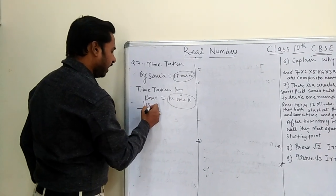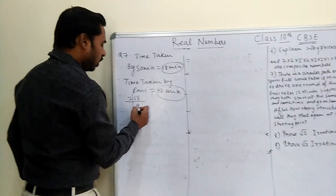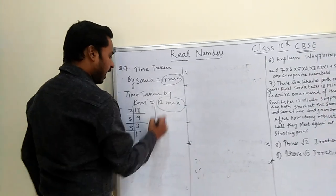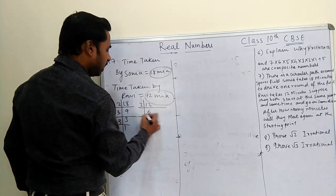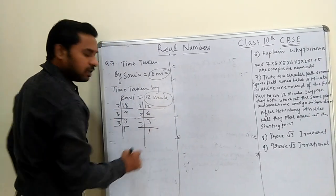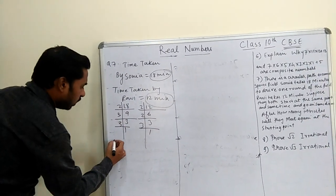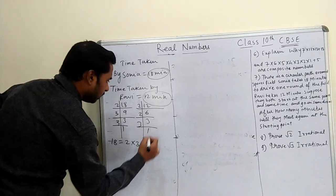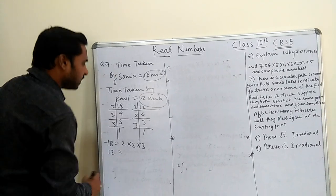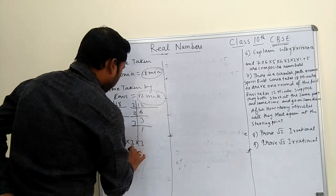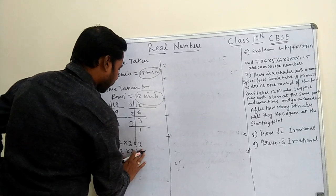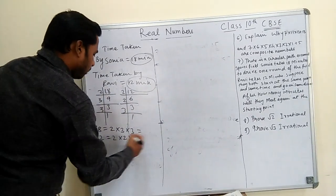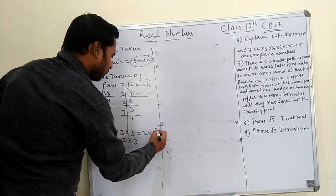First we find the prime factors. For 18: 2 × 9 = 2 × 3 × 3 = 2 × 3². For 12: 2 × 6 = 2 × 2 × 3 = 2² × 3. So 18 = 2 × 3² and 12 = 2² × 3.